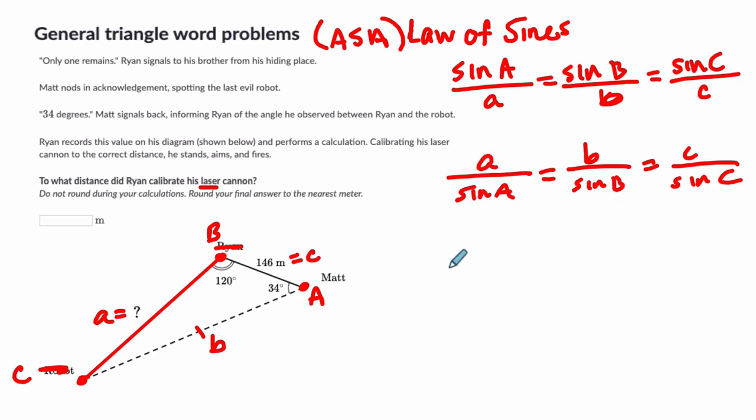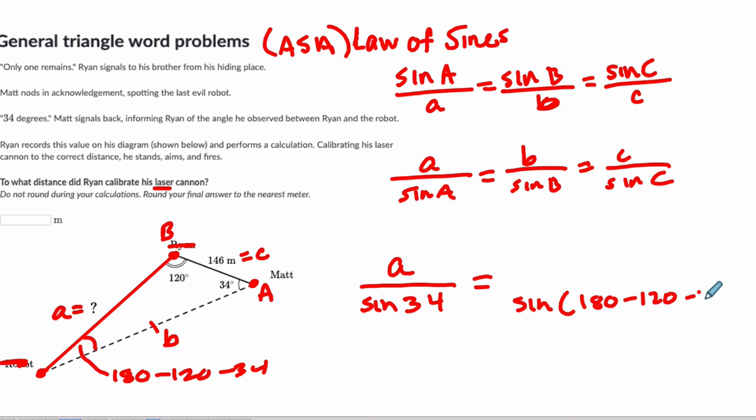I'm going to use this version right here because we're missing a side length. I like to keep my unknowns in my numerator. So side length A, the laser path, over the sine of 34 has to equal—now you can't use this angle because you're also missing the side length here. So we have to use our third angle in our triangle. And this angle right here has to be the full triangle degree, 180 minus 120 minus 34. So the sine of C is really just the sine of that expression.